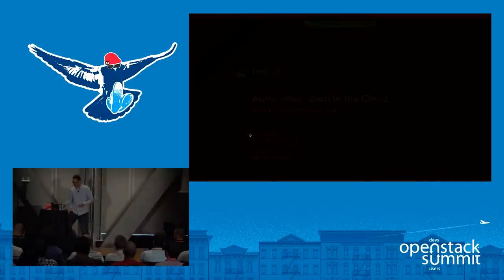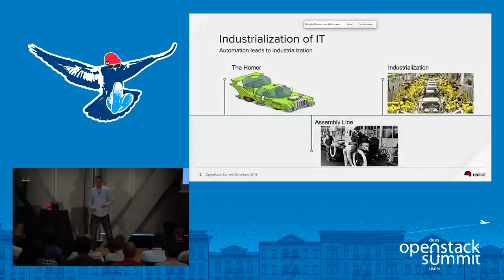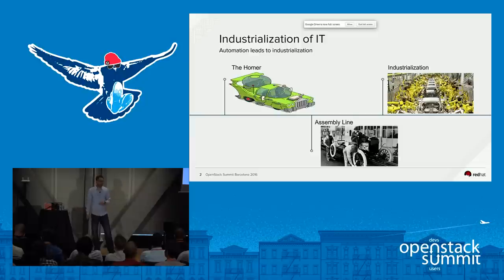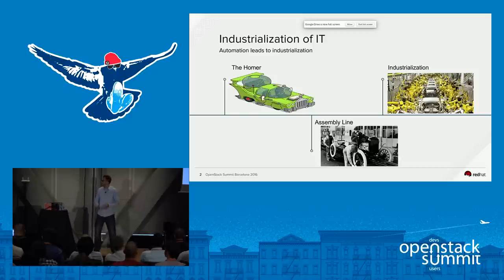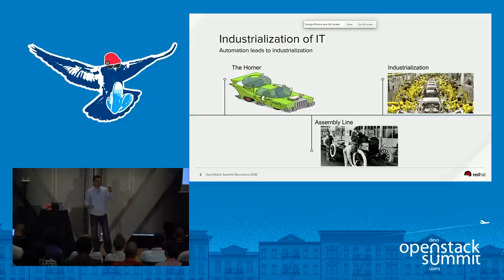Before we get into the technologies, I want to talk about a concept I see with all my customers right now: the industrialization of IT. The auto industry has already gone through this process. If you've seen the Simpsons episode where Homer gets to build his own car — he builds the perfect car for Homer Simpson, which only Homer would want to drive, costing $80,000. The project failed miserably with zero reusability. That probably sounds familiar about how we started in IT.